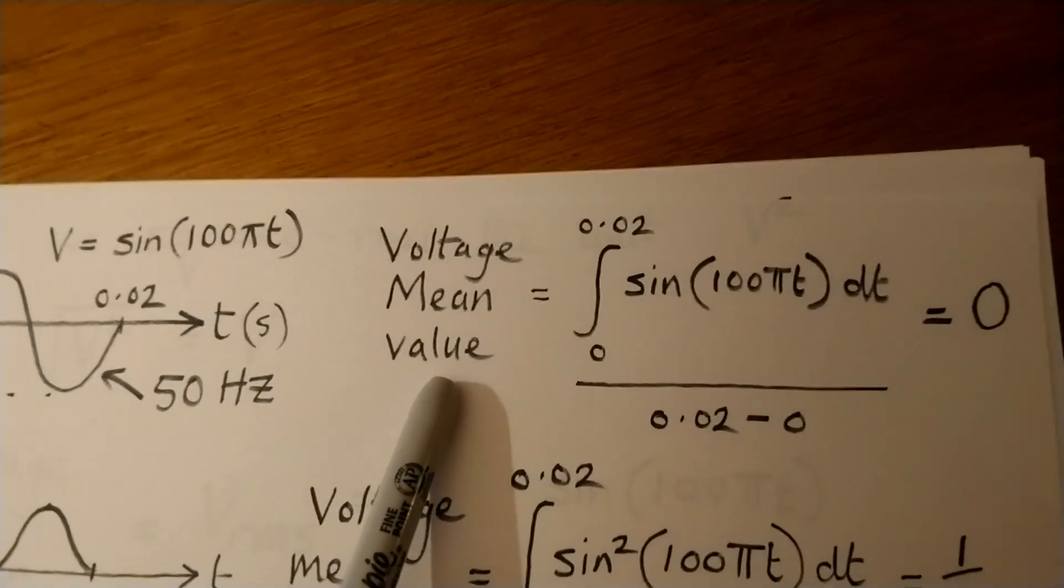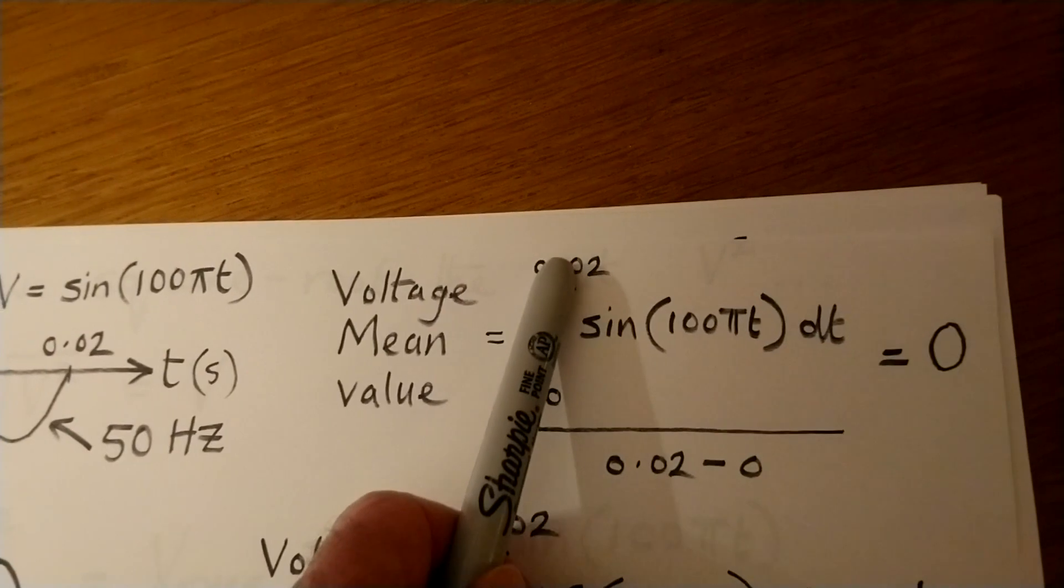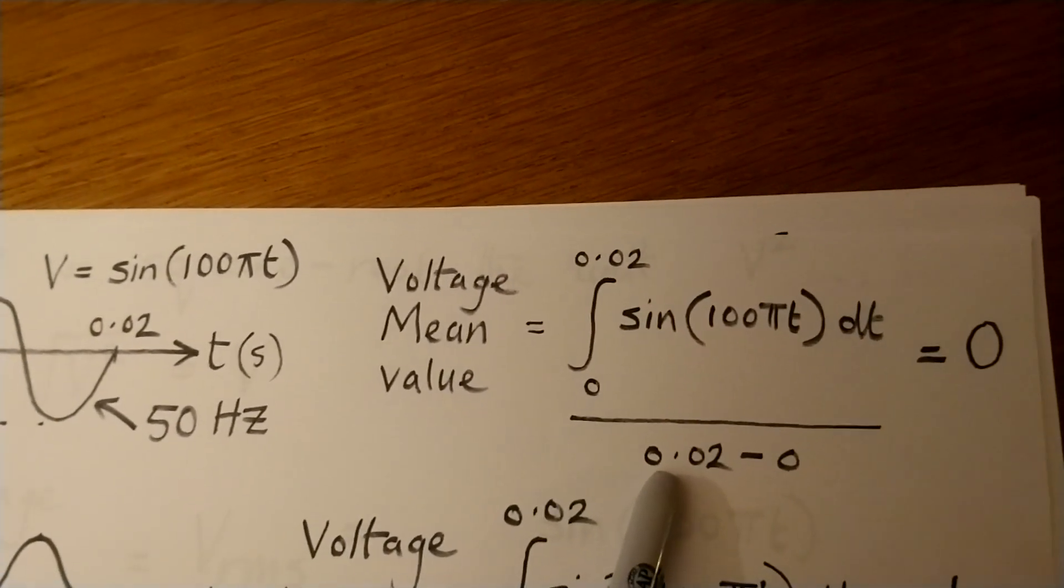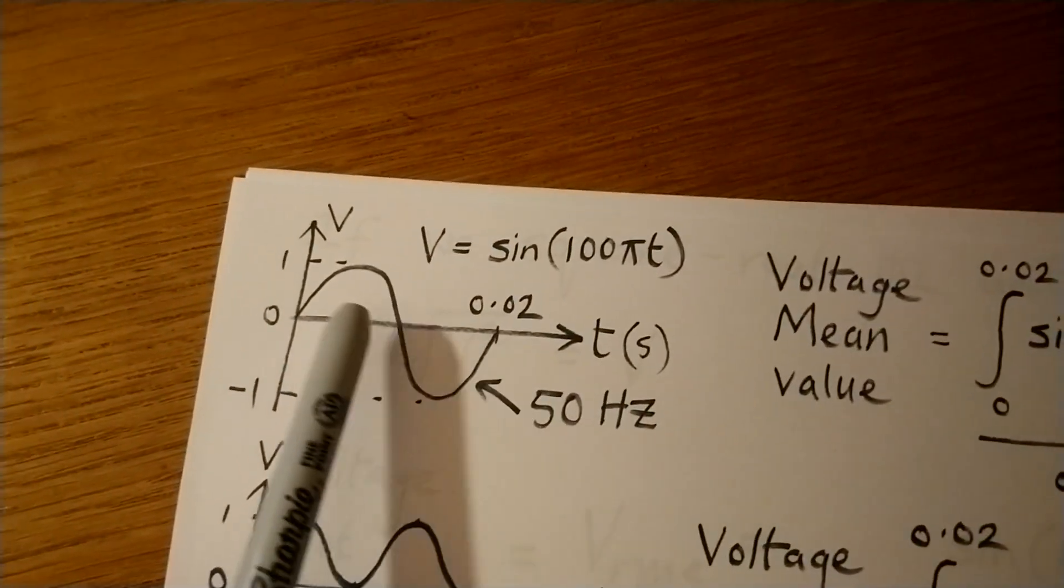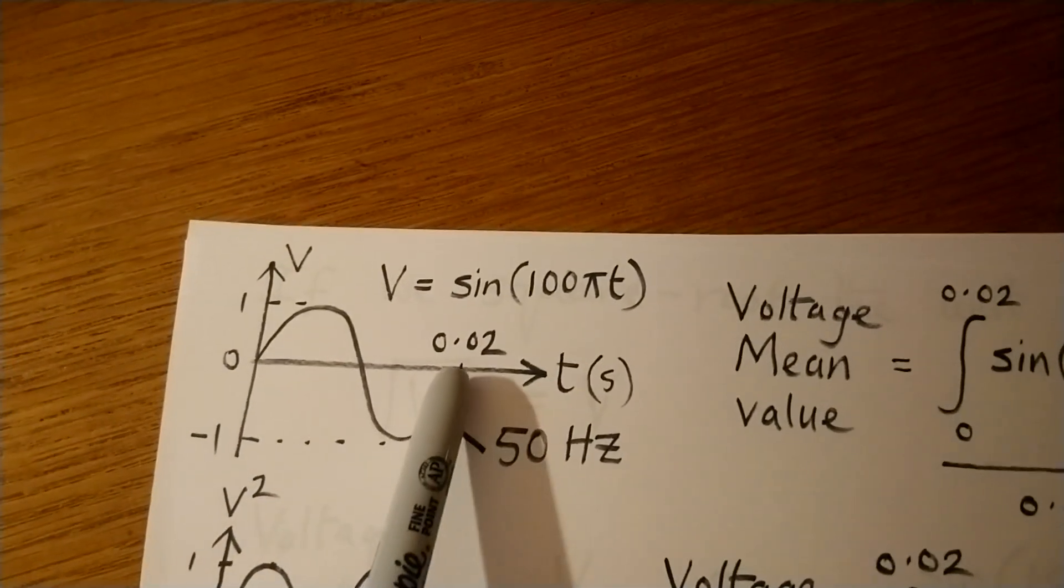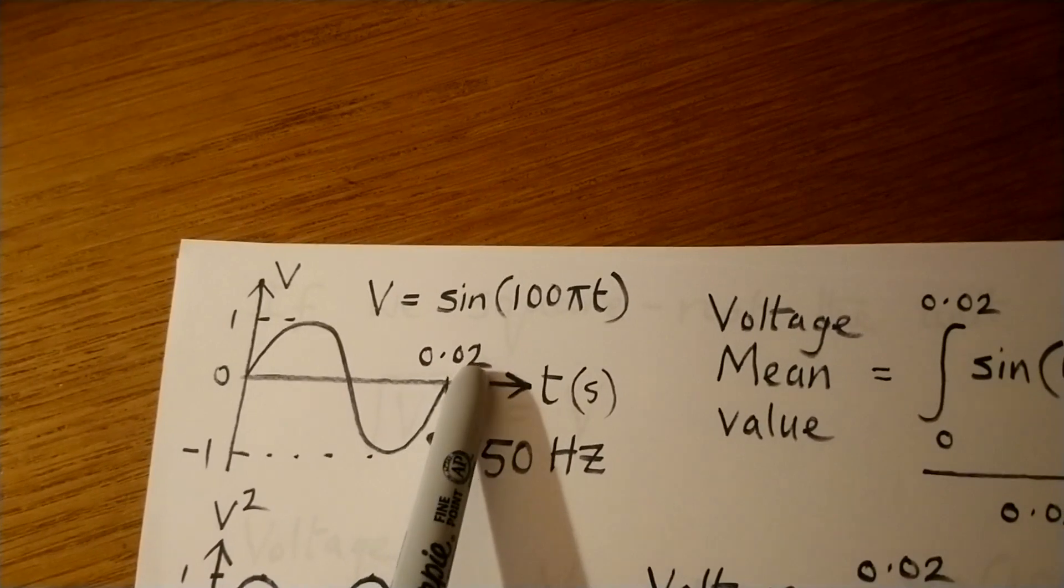We can work that out by integrating the function between 0 and 0.02 and then dividing by the time period of that wave. So going back to our graph, we've simply integrated the whole thing and then we've divided by the time taken to do that one cycle, 0.02.